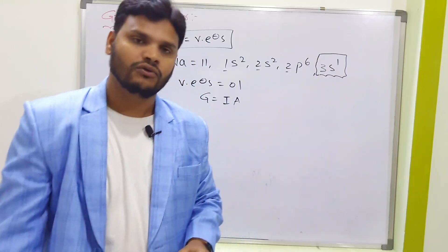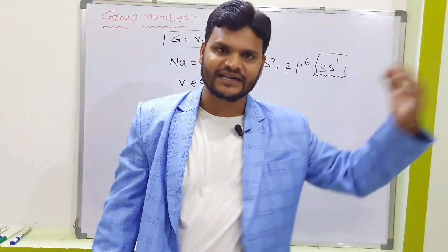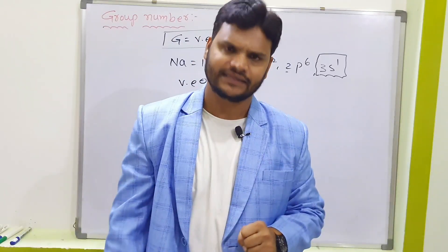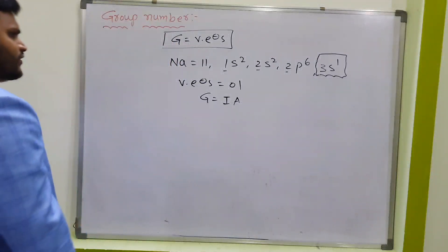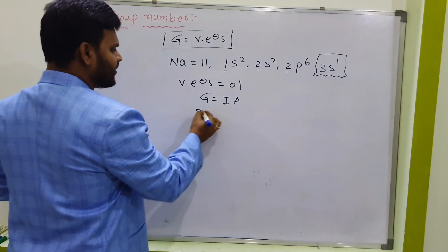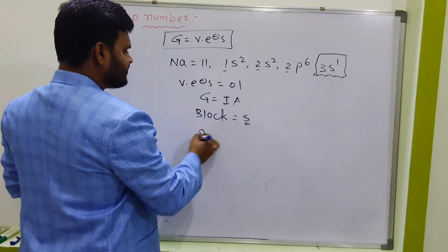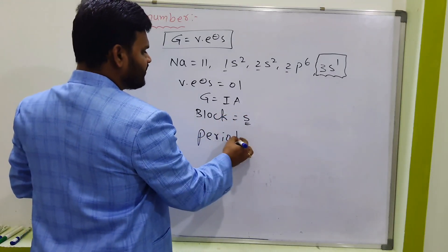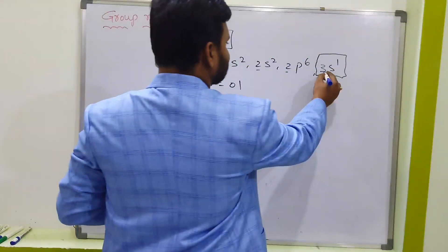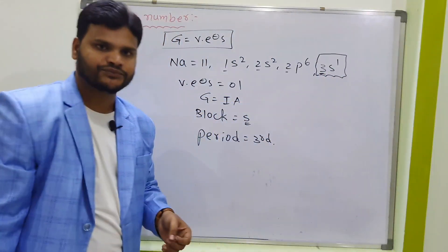In examinations, they may ask which block sodium belongs to. The periodic table contains 4 blocks: S block on the left side, P block on the right side, D block in the middle, and F block at the bottom. Since sodium's last electron is present in the S orbital (3s¹), sodium is an S block element. Sodium belongs to the third period because the last energy level is 3.